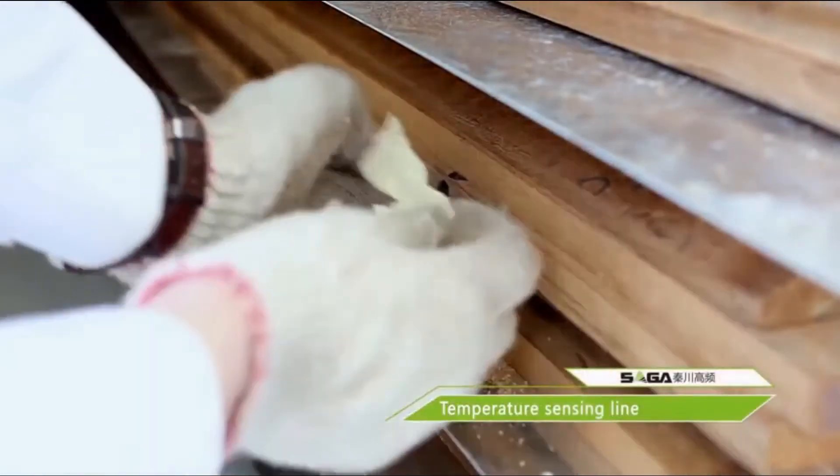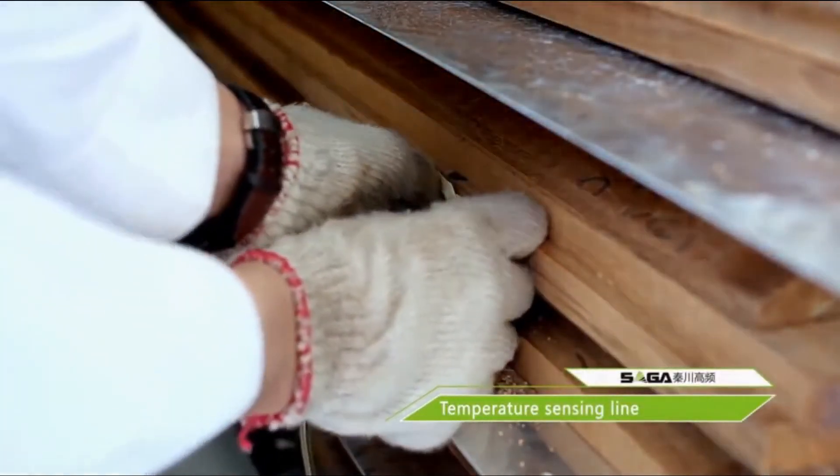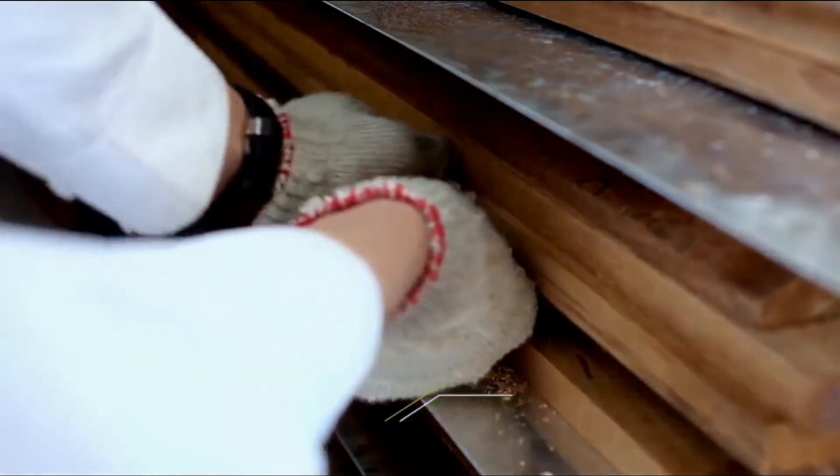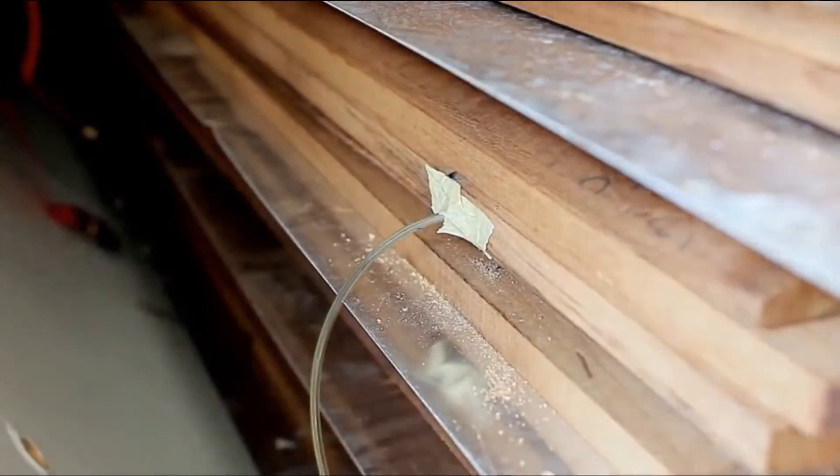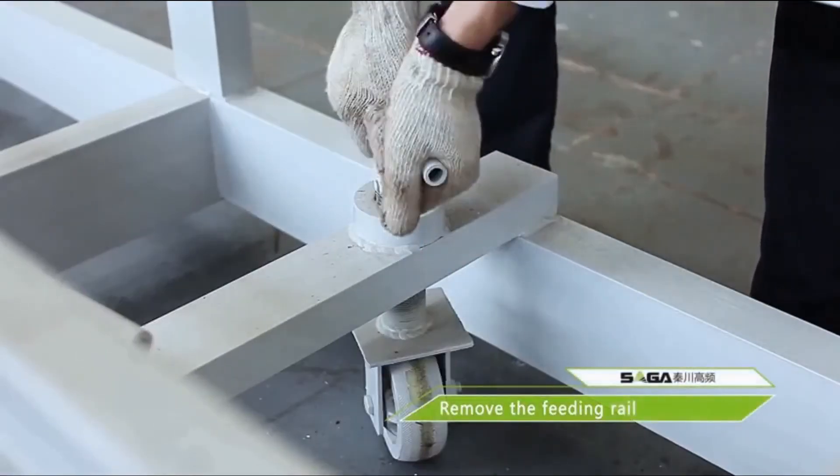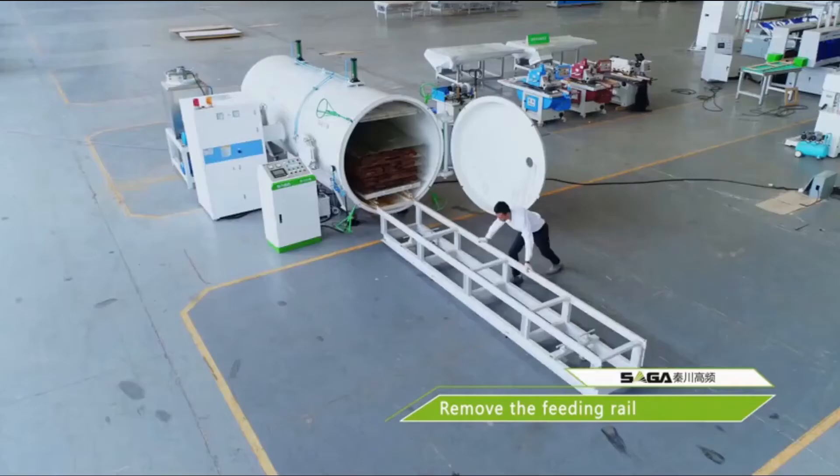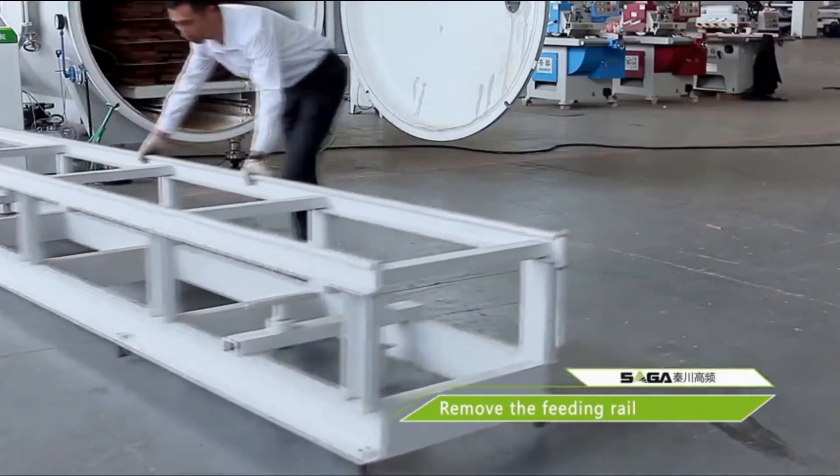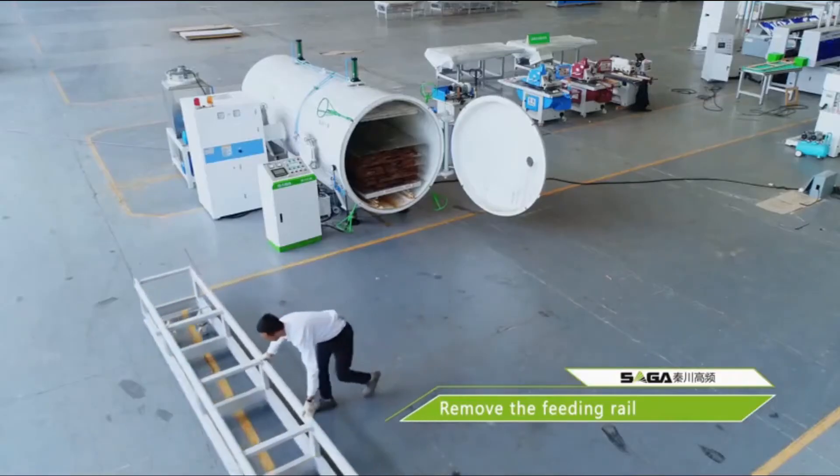We close the small window. We drill a hole on one piece of wood and put the temperature sensor. We move the rail away. You can move it to another place without taking your production space.